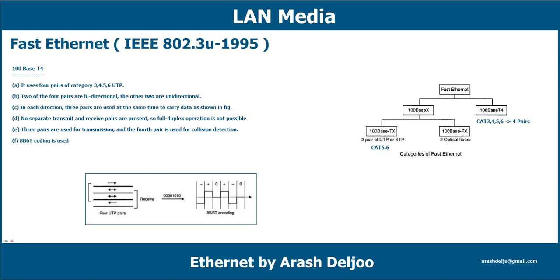To review 100Base-T4: it uses four pairs of category 3 cable (or higher). Two pairs are bidirectional and two are unidirectional. In each direction, three pairs carry data simultaneously, so no separate transmit and receive pairs exist — full duplex is not possible. Three pairs are used for transmission, the fourth for collision detection, and 8B6T coding is used.